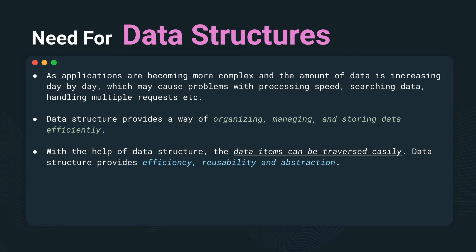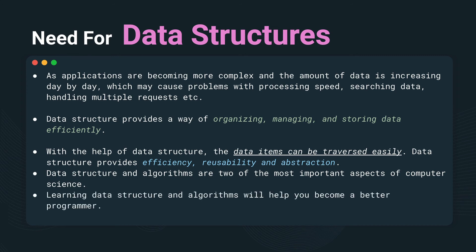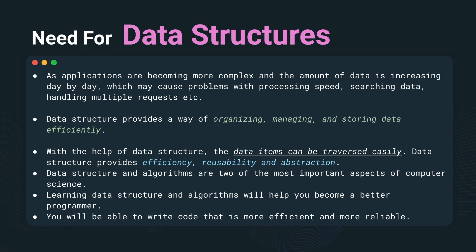Data structures provide efficiency, reusability, and abstraction. For programmers, there are two most important things in computer science: data structures and algorithms. Learning data structures will definitely make you a better programmer because you can compare two different ways of solving the same problem. One problem can be solved in different ways, and you have to find the most efficient way. Data structures and algorithms help you determine which solution is best, and allow you to write code that is more efficient and more reliable.